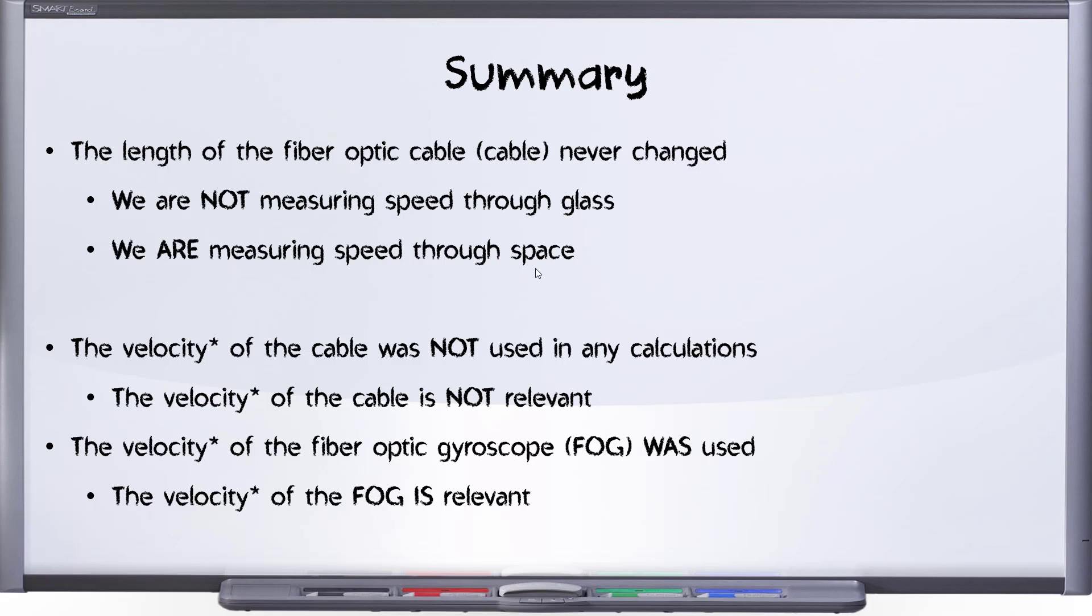Next, the velocity of the cable does not appear in any of our calculations. We did this whole setup without considering the movement of the cable at all, and indeed I showed the quotes from the Wang paper—they agree that the shape of the moving cable has no bearing on this whatsoever. What is relevant is the velocity of the fiber optic gyro itself. The velocity of the fiber optic gyro appeared in that equation as v, and it is relevant. It's directly proportional to the amount of phase shift.